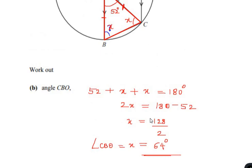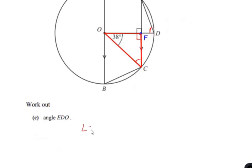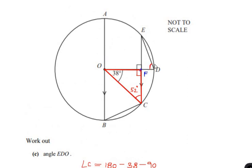Now let us find out part C: work out angle EDO. Before we find angle D, let us find angle C by taking triangle OFC — let me mark this point as F — so we are considering triangle OFC. Since line EF is perpendicular to line OD, we have an angle of 90 degrees at point F. Using the angle sum property: angle C equals 180 degrees minus 38 degrees minus 90 degrees, giving us an angle of 52 degrees.